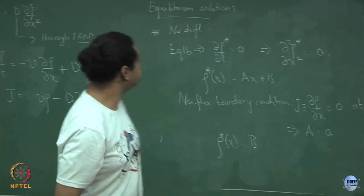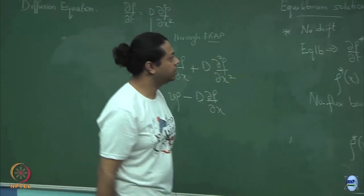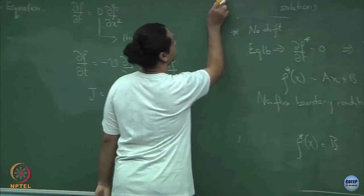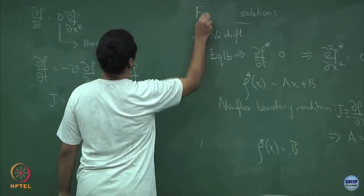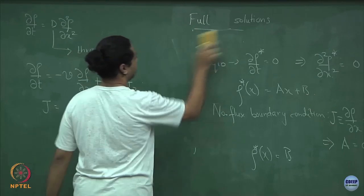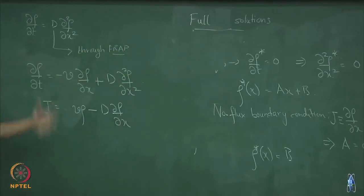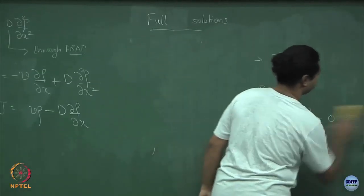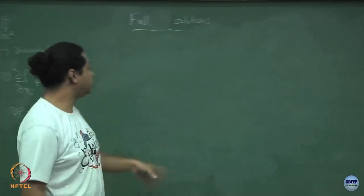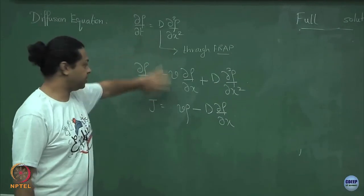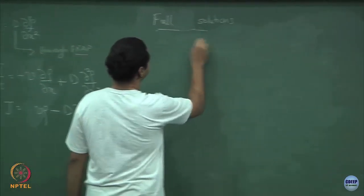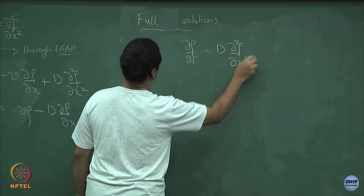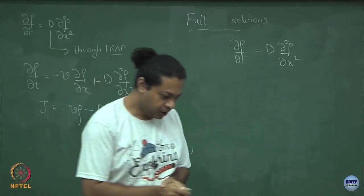So that was the easy part — the solutions at equilibrium. At equilibrium for the drift-diffusion equation, unlike the simple diffusion equation where you get a constant profile, here you recover back the Boltzmann distribution. We can also write the full time-dependent solution of the diffusion equation. It is good to know how to solve the diffusion equation completely in all cases.